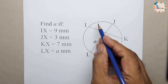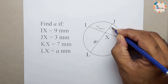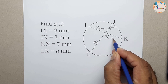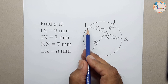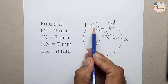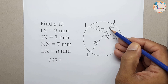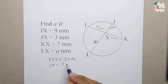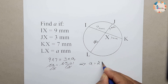IX is given as 9 mm, JX is equal to 3 mm, and KX is 7 mm. These measurements are given. Now according to rule number 10: 9 multiplied by 7 will be equal to 3 multiplied by A. So 3A equals 63, and dividing both sides by 3, A is equal to 21 mm.